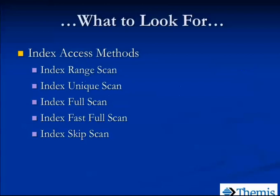Once we've decided whether or not our join method is correct, did he use an index? Did he do two full table scans instead of a full table scan and an index scan? We're looking for the different types of index access methods that might be there. Let's look at each one so you can see what they look like.